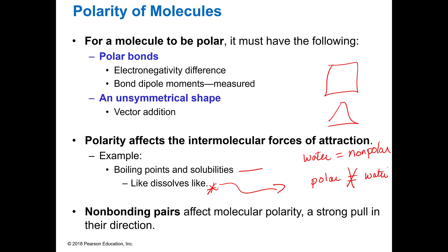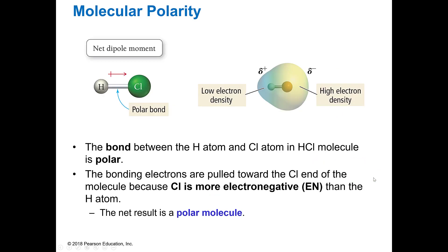The non-bonding pairs, the lone pairs, affect the polarity because they're doing this strong pull and they pull more of that negative area to one end of the molecule. That's what causes this dipole moment. When you look at hydrogen and chlorine, chlorine has a lot more electrons and tends to pull more electrons towards it, so that is going to be a polar bond.